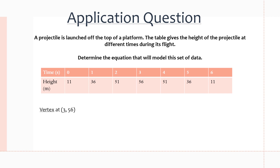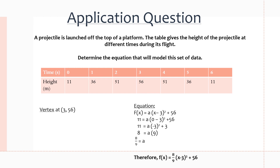Plugging the vertex into the equation, we then use the point (0, 11) and substitute that in for x and y, simplifying to get a = 8/9. As a result, f(x) = (8/9)(x - 3)² + 56.